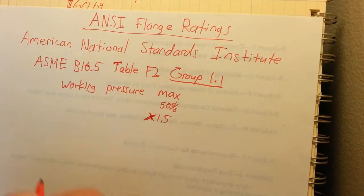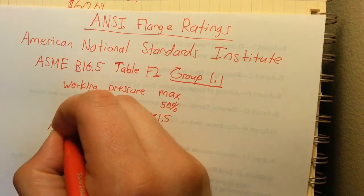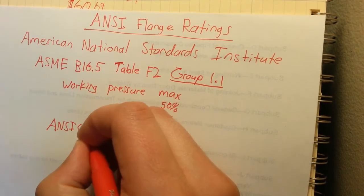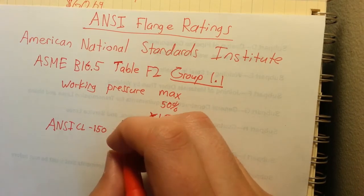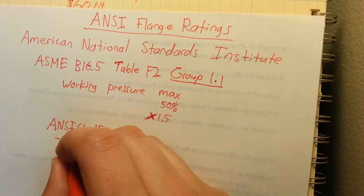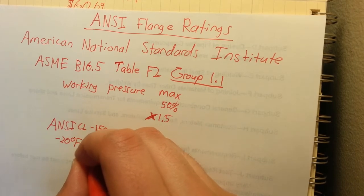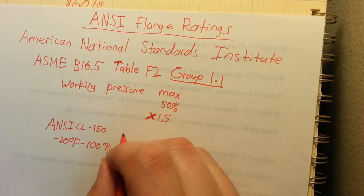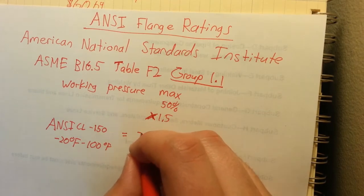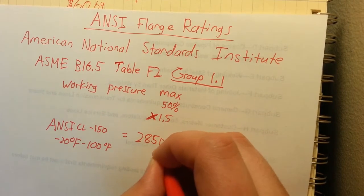So the lowest ANSI class is 150. And that working pressure at negative 20 degrees Fahrenheit to 100 degrees Fahrenheit is 285 PSI.